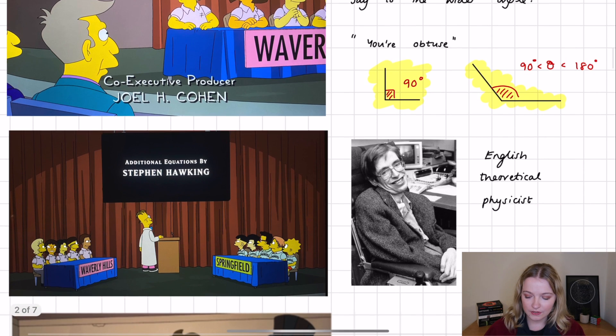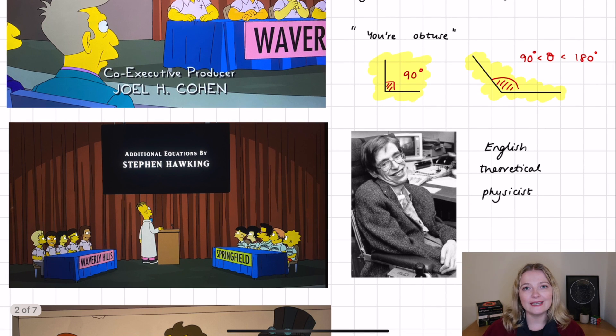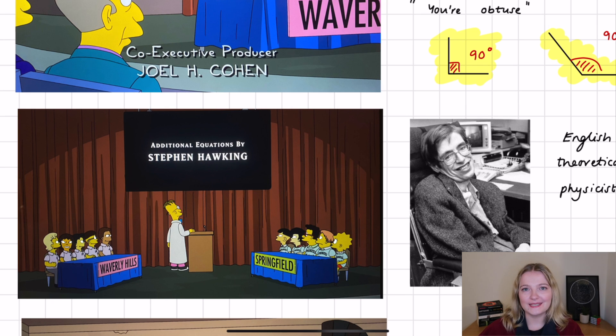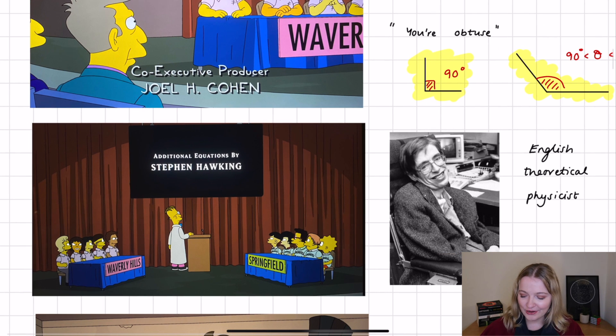Then we move on to the introduction of each of the teams in the episode. And they both have sort of a film to show to be like, this is what, you know, this is our Mathletes team. And Waverley Hills had, obviously, the idea is that this is from a very wealthy school, they have a lot of money to put into education. And they finalised their presentation by saying that the additional equations in that presentation was by Stephen Hawking, which, yeah, I just thought was a little bit funny.